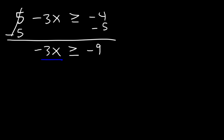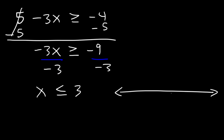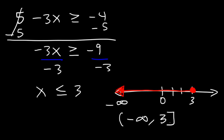Next, we need to divide both sides by negative 3. When you divide or multiply by a negative number, you need to change the direction of the inequality sign. Negative 9 divided by negative 3 is positive 3, so x is less than or equal to 3. We're going to have a closed circle shaded towards the left. Using interval notation, the solution is negative infinity to 3 using brackets.